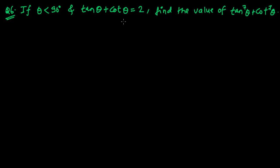Welcome friends, once again in another question. This is the sixth type of question in this topic. The question says: if theta is an acute angle (less than 90°) and tan theta plus cot theta equals 2, find the value of tan to the power 7 theta plus cot to the power 7 theta.